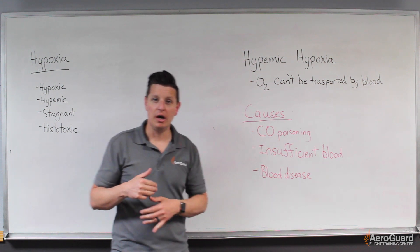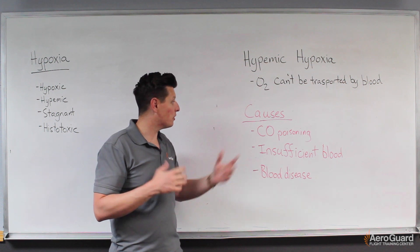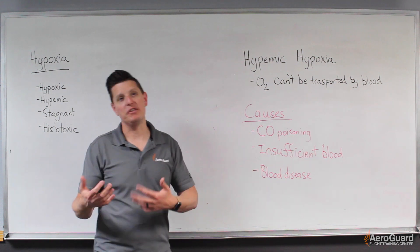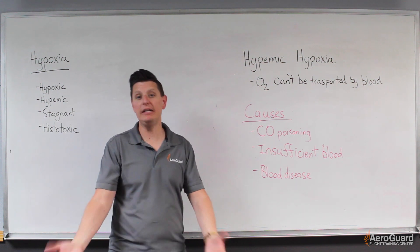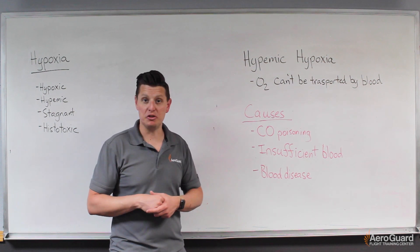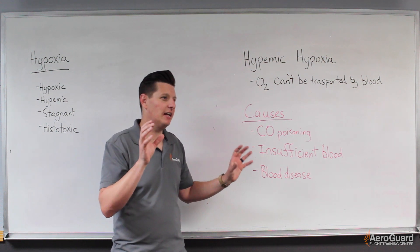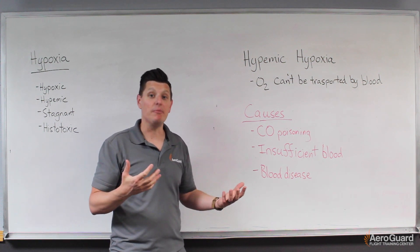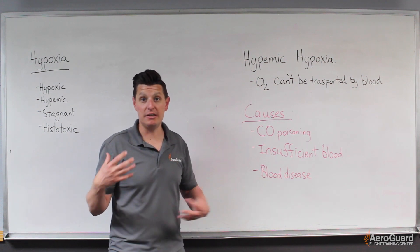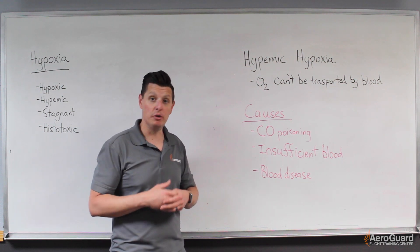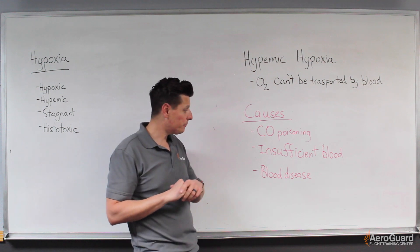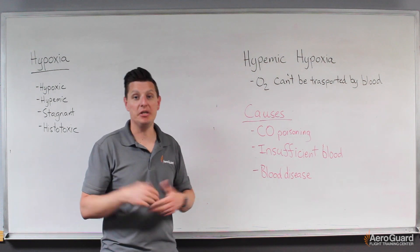This is also true when smoking cigarettes. Another example is insufficient blood — if you're bleeding severely, there may not be enough blood to carry oxygen throughout your body. A less obvious example is donating blood: after donation, your body takes a long time to replenish, and in that period you may be more susceptible to hypemic hypoxia. Other examples include blood diseases like anemia.